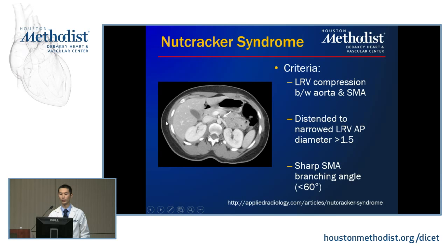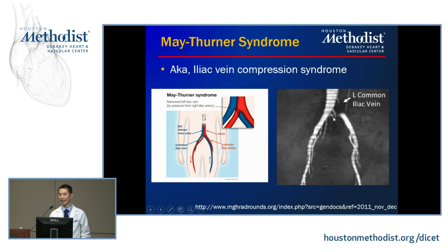May-Thurner syndrome affects the left iliac vein, caused by the right iliac artery pulsating and compressing it on dynamic imaging. This leads to left lower extremity edema and pain and can cause left extremity DVTs. It's another compressive syndrome to be aware of.